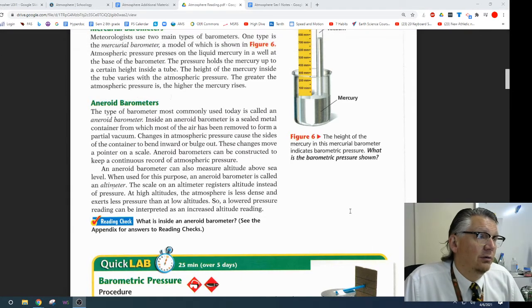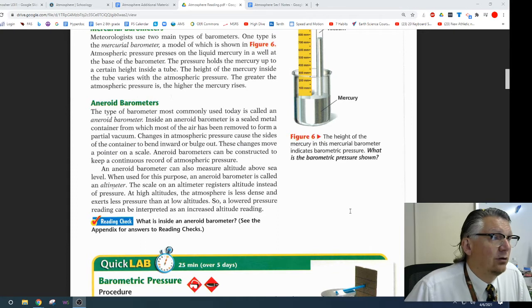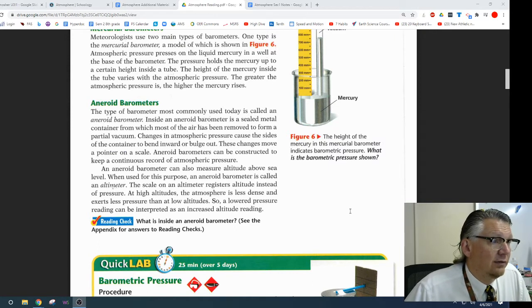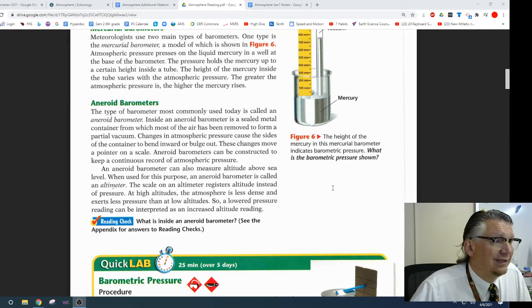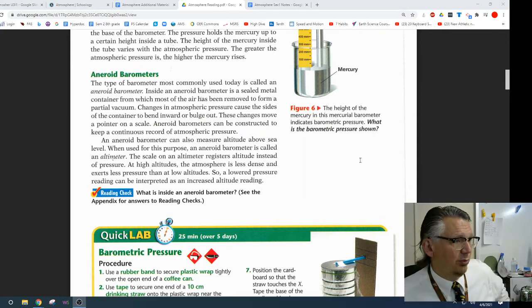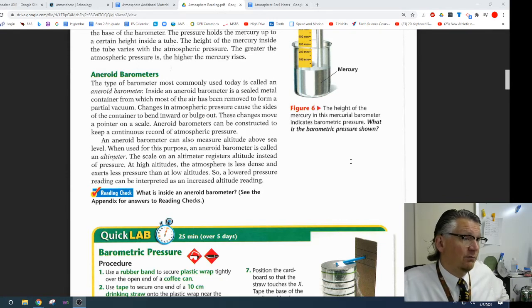Aneroid barometers. The type of barometer most commonly used today is called an aneroid barometer. Inside an aneroid barometer is a sealed metal container from which most of the air has been removed to form a partial vacuum. Changes in the atmospheric pressure cause the sides of the container to bend inward or bulge outward. These changes move a pointer on a scale. Aneroid barometers can be constructed to keep continuous record of atmospheric pressure. An aneroid barometer can also measure altitude above sea level. When used for this purpose, an aneroid barometer is called an altimeter. The scale on an altimeter registers altitude instead of pressure. At high altitudes, the atmosphere is less dense and exerts less pressure than at low altitudes. So, a lower pressure reading can be interpreted as an increase in altitude reading.